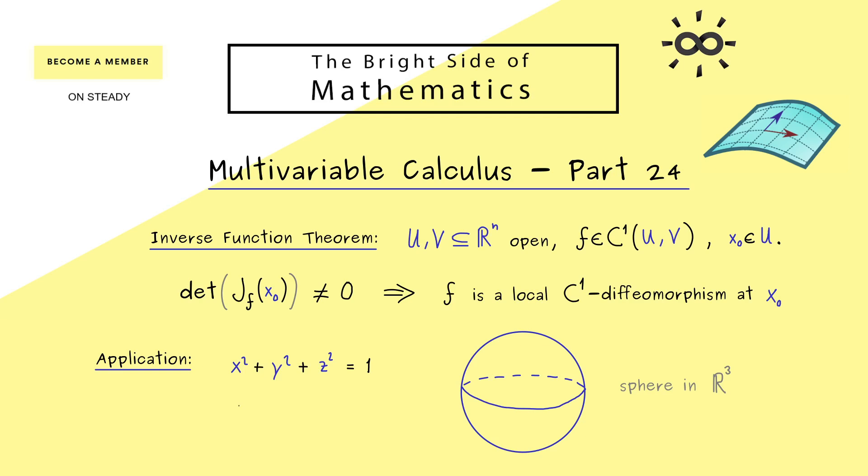In other words, can we reformulate this equation on the left hand side? Namely, we want to do it in such a way that we have a function z of x and y. So this would give us an explicit formula for our variable z.